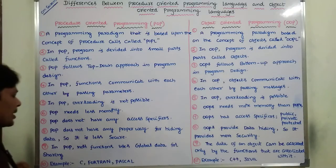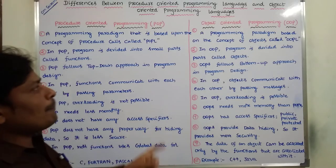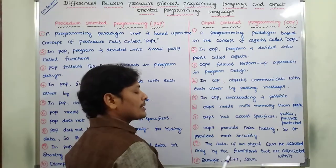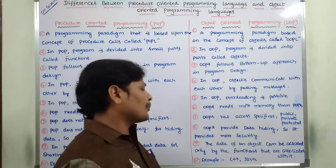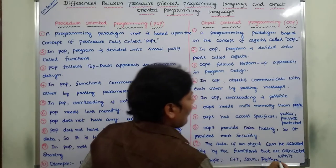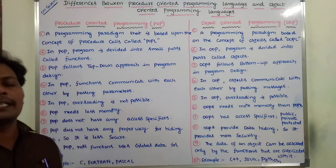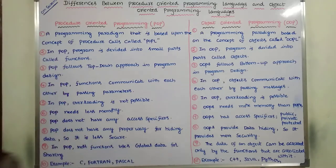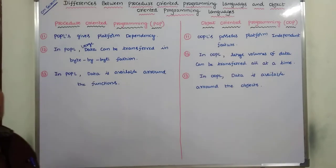The examples for Procedure Oriented Programming Languages are C, Fortran, and Pascal. The examples for Object Oriented Programming Languages are C++, Java, and Python.